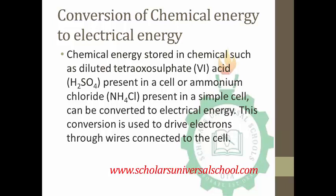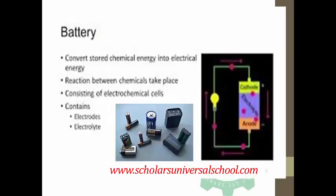This conversion — of the H2SO4 or the ammonium chloride — is used to drive electrons through wires connected to the cell, thereby supplying electricity to the connected circuits. The battery converts stored chemical energy to electrical energy, and the reaction between chemicals results in the transfer of electrons through the wires.